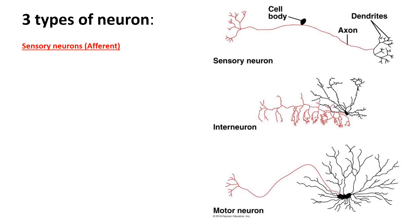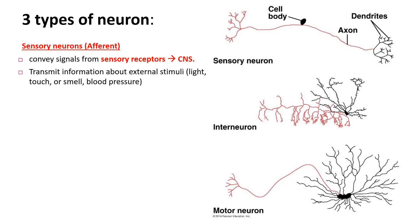There are three types of neurons. First, sensory neurons convey signals from sensory receptors to the CNS. They receive information about stimuli from sensory receptors and send it to the CNS. Sensory neurons transmit information about external stimuli such as light, touch, smell, blood pressure, and pain.